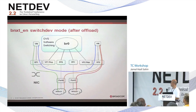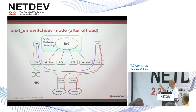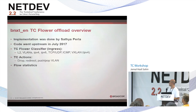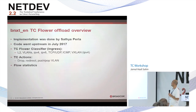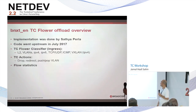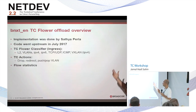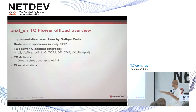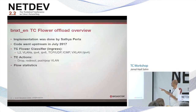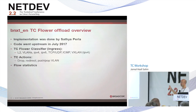That's the basic infrastructure to accept TC flower flows into the hardware. All that implementation was done by my colleague Satya Perla. The code went upstream in July 2017. The TC flower classifiers we support are all ingress: L2, VLANs, IPv4, IPv6, L3, TCP, UDP, ICMP, and VXLAN over IPv4. The TC actions supported are drop, redirect, and push/pop VLAN.